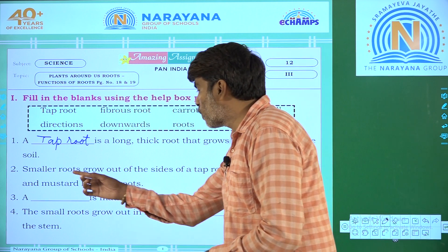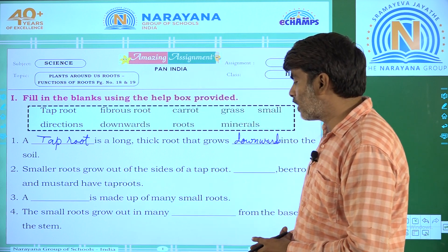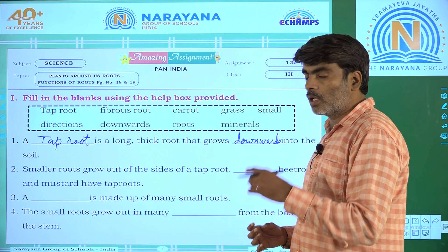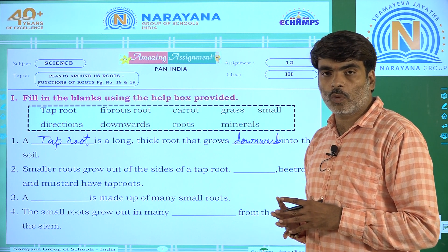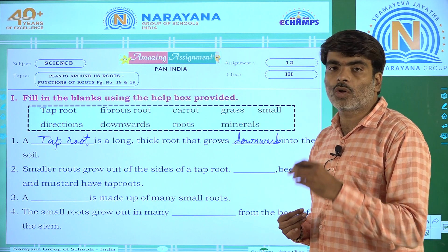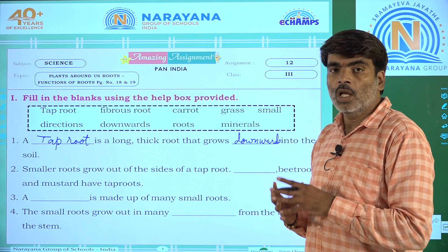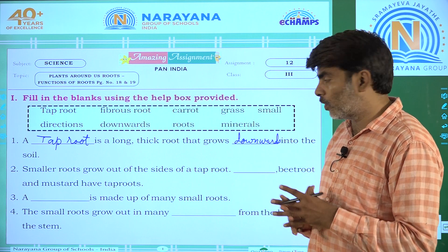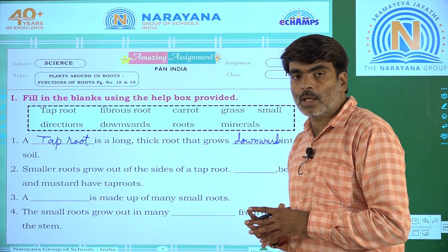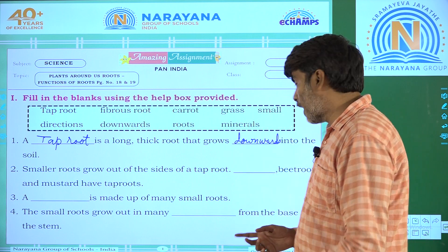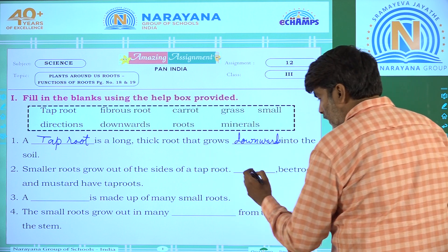Second question: Smaller roots grow out of the sides of the tap root. We know that if you observe a tap root like carrot or beetroot, we see small hair-like structures. So smaller roots grow sideways. We can take the examples of carrot, beetroot, and mustard.